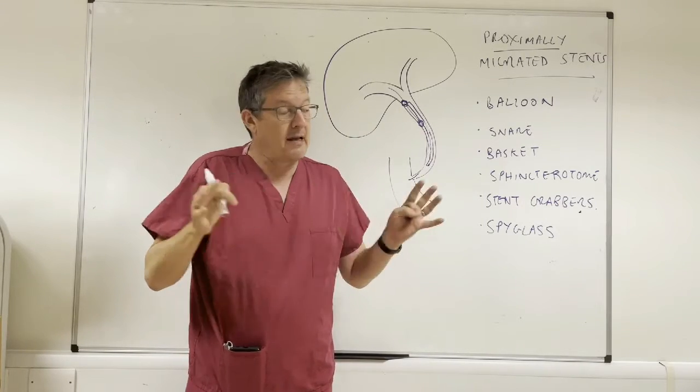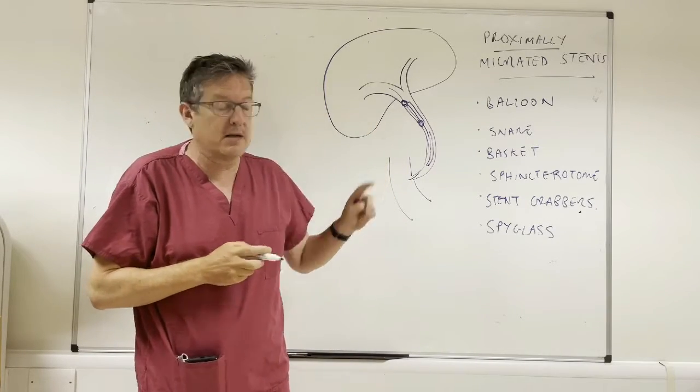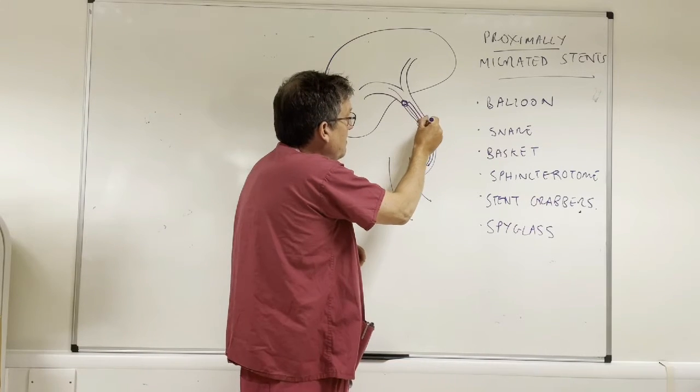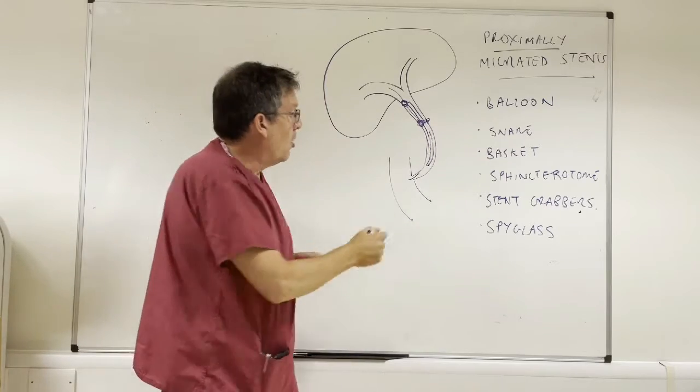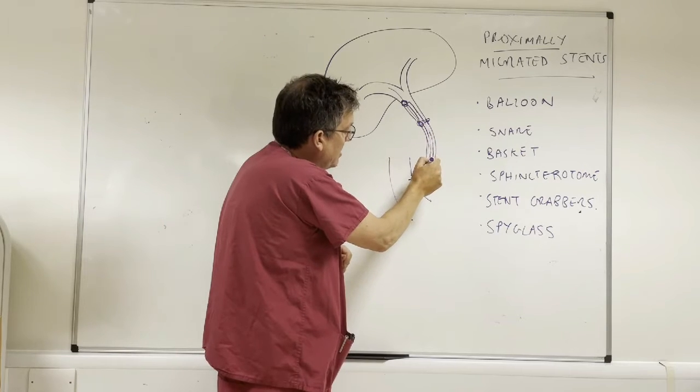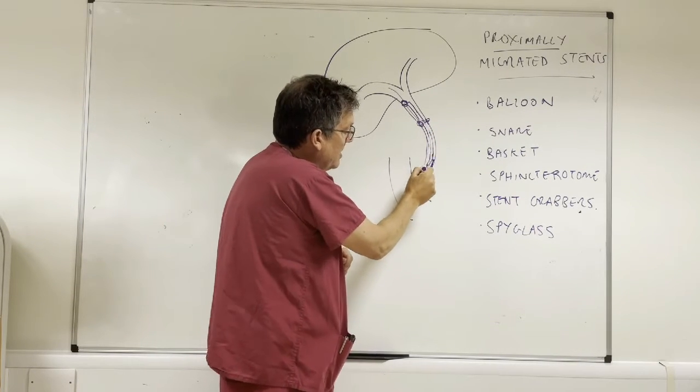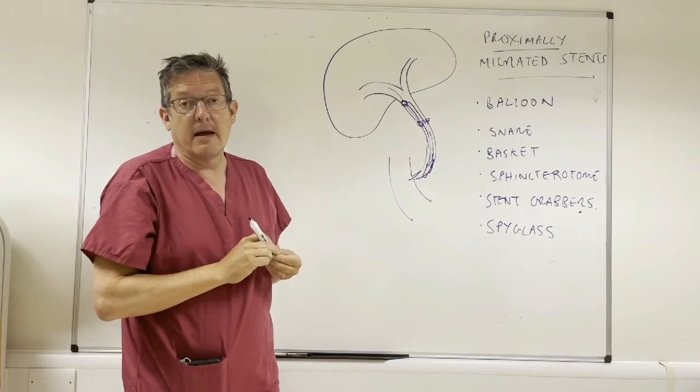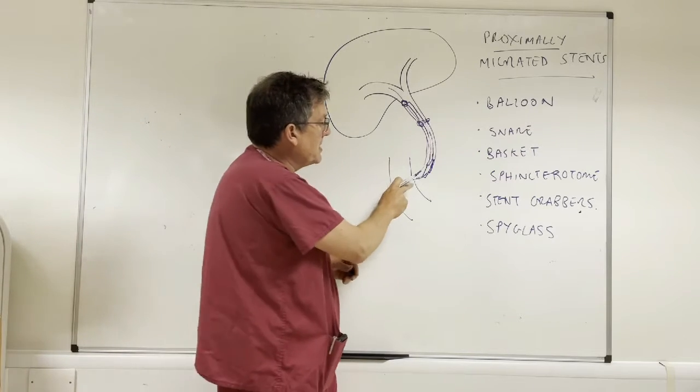I can say that from my own experience over the years I have never seen that technique work. All that happens is a number of things: you either just impact the stent against the bile duct wall or if you get any downward traction at all what you find is that at the distal end of the duct that stent just impacts in the wall and you just do not remove the stent in doing that.